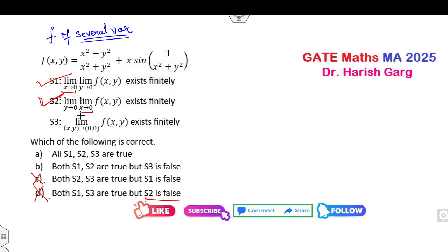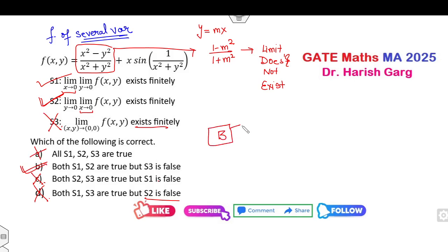Now if you consider the third part, that means you have taken the simultaneous limit (x,y) → (0,0). So definitely for this portion, if you take on the path y = mx, this value becomes (1 - xm²)/(1 + m²). That means limit does not exist. So if the limit does not exist, that means S3 is my wrong statement. So a option is cancelled. Right answer of this problem is b is my correct answer.